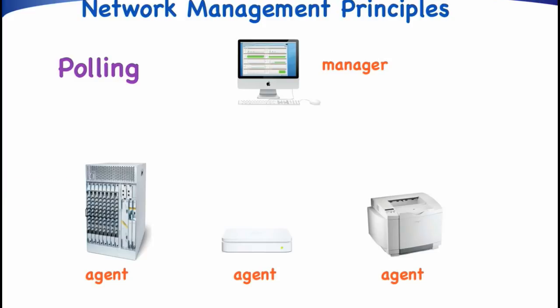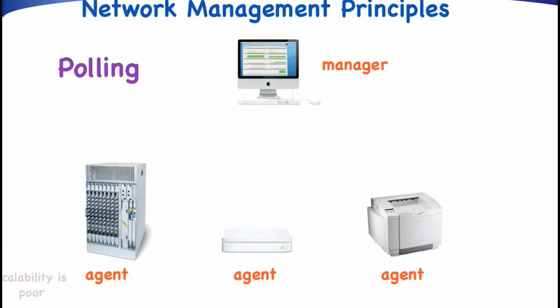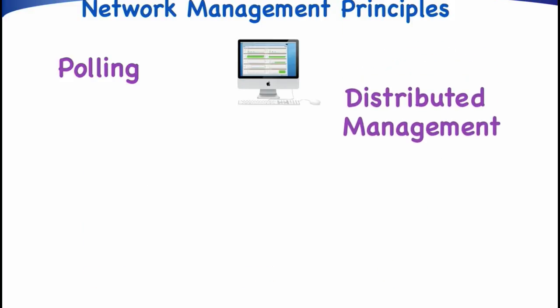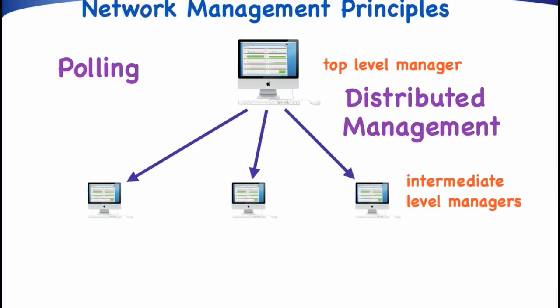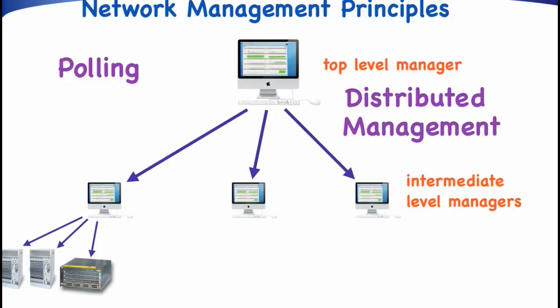In addition, the manager will have to handle a lot of management traffic. Scalability is therefore poor, and if thousands of devices need to be polled, the tasks of the manager should rather be distributed over several managers. To distribute the management functionality, a hierarchy of managers can be created. In such hierarchies, the top-level manager interacts with intermediate-level managers, which in turn poll the various agents.